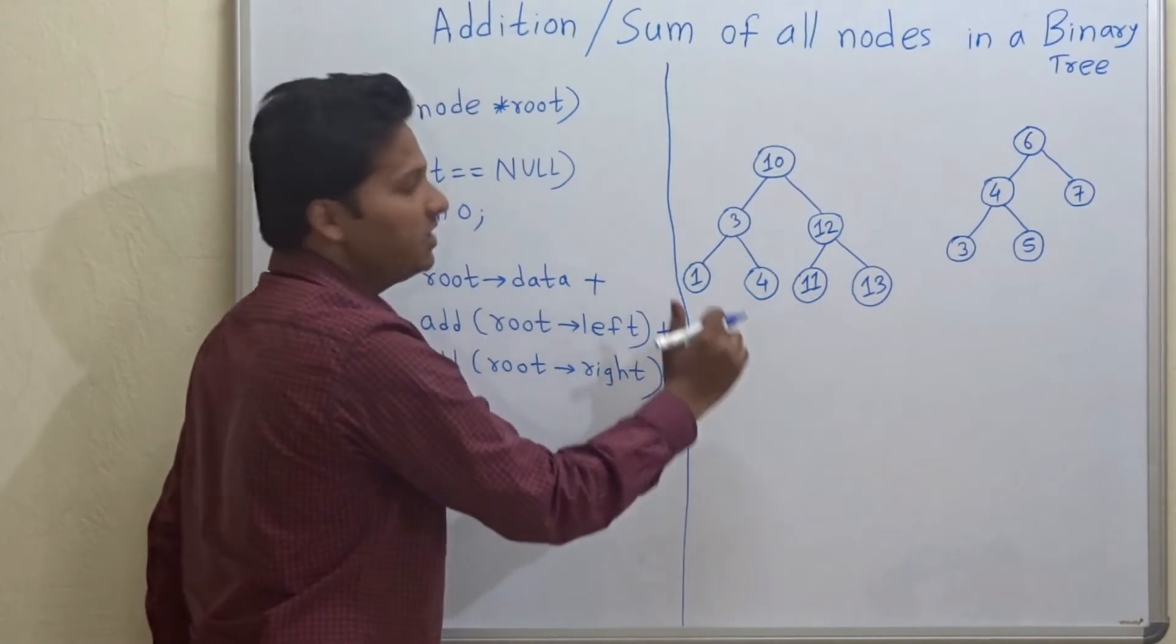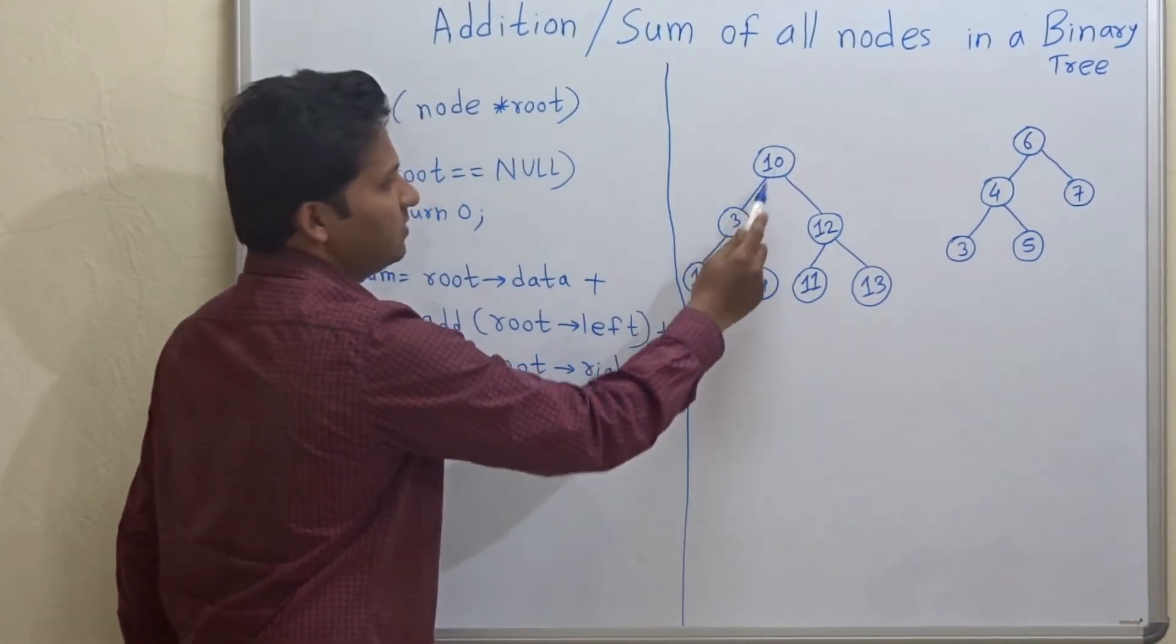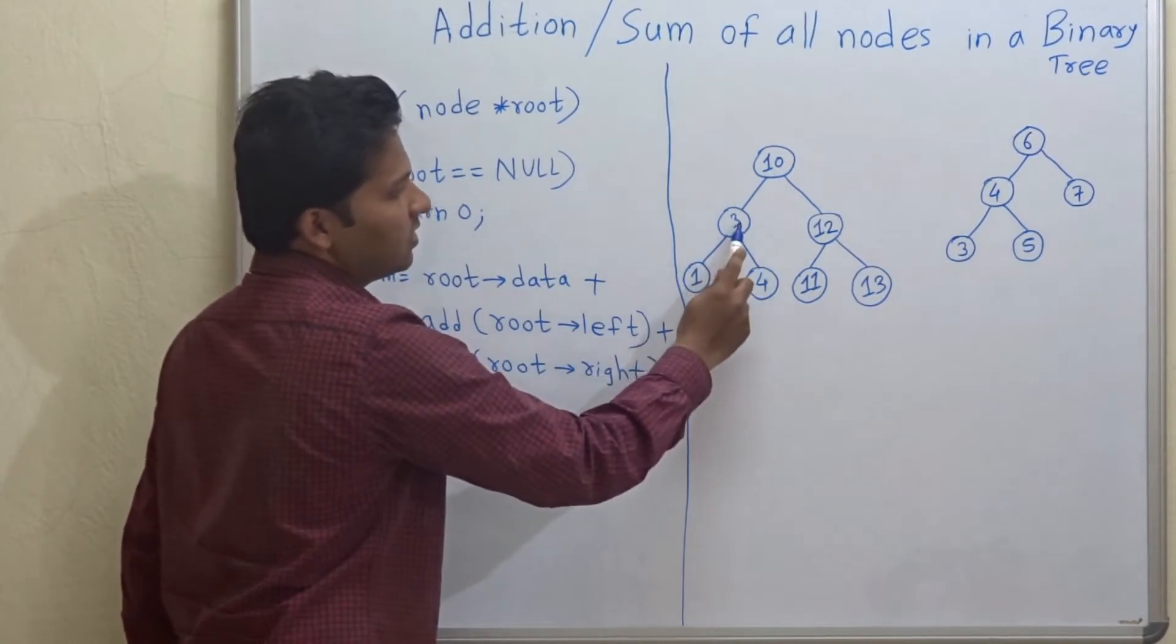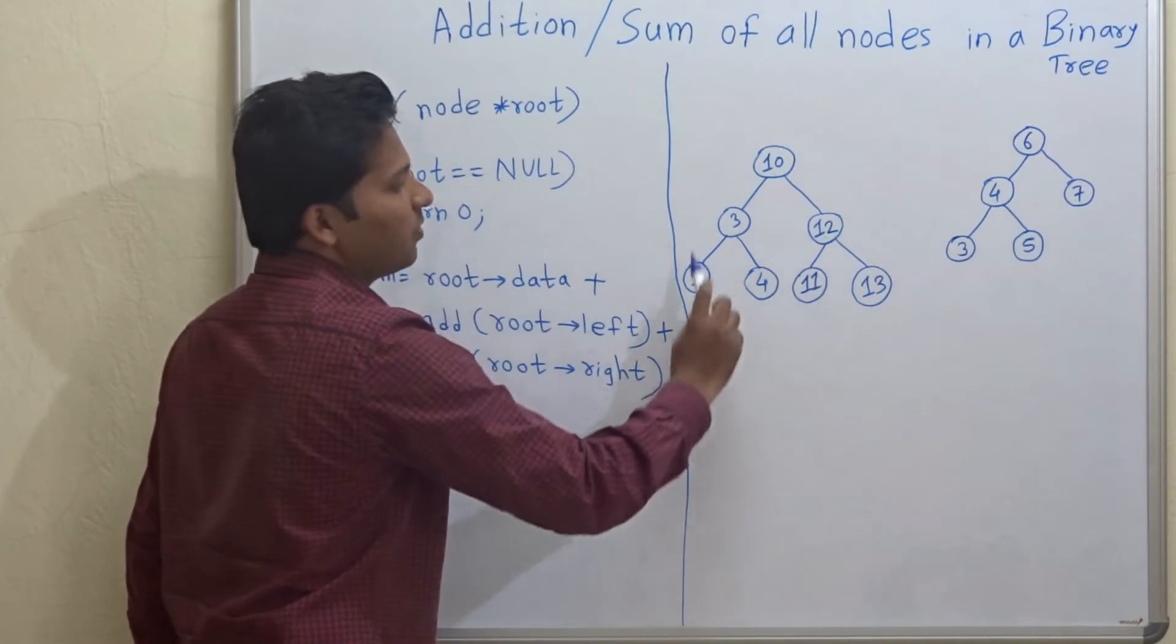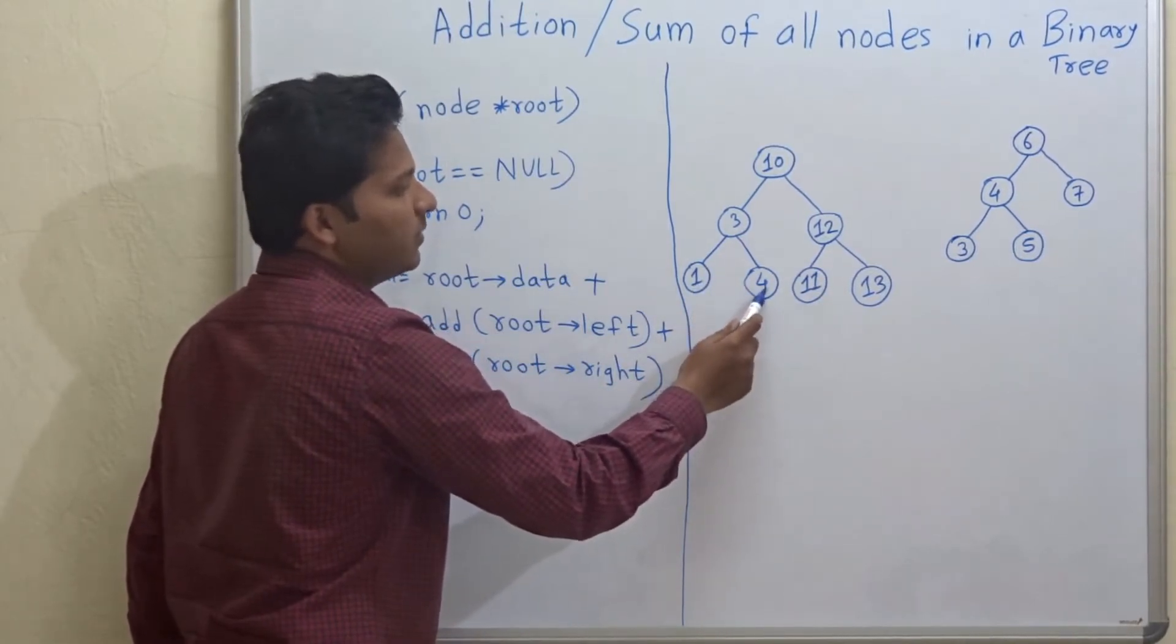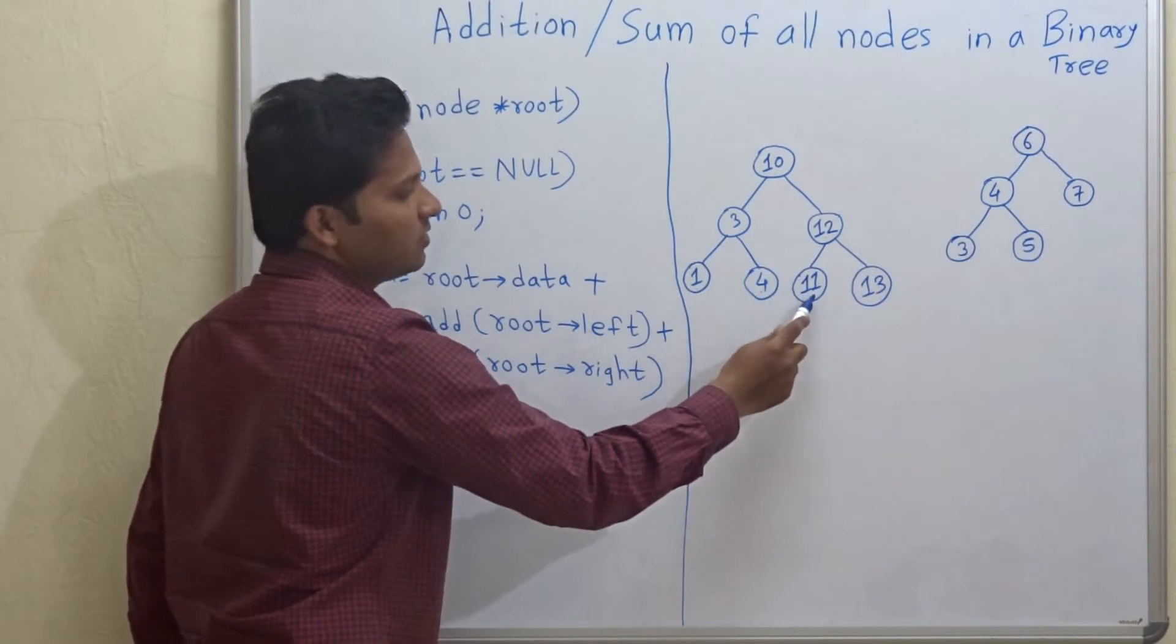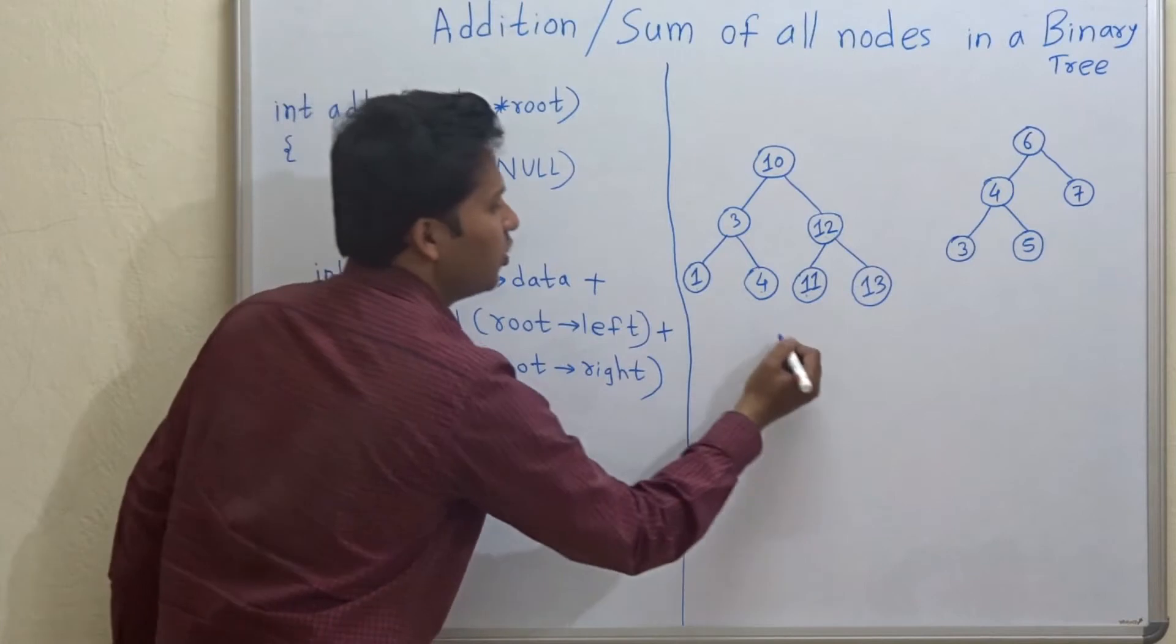So this is the binary tree and we will add all the nodes. So 10, 10 plus 3 is 13 plus 12 is 25 plus 1, 26 then plus 4 is 30, 30 plus 11 is 41, 41 plus 13 is 54.